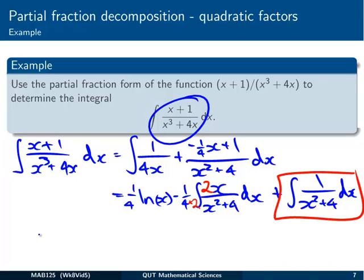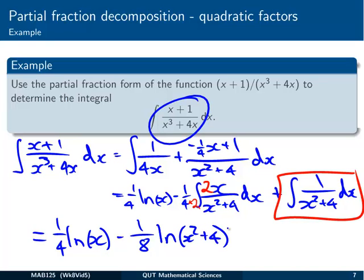So, to finish it all off, we've got 1 on 4 times log x. Take away, now it's 1 on 8, times the log of the bottom, x squared plus 4. And the final one, which I'll give you, which you could read off a table though, is going to be a half of tan inverse of x on 2. And don't forget the plus c at the end.